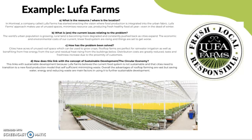The current issues in agriculture: the world's urban population is growing, rural land is becoming more degraded and constantly pushed back as cities expand, and the economic and environmental costs of our current linear food system are rising. Cities have acres of unused roof space which can be used to grow crops. Rooftop farms are perfect for rainwater irrigation, benefit from free energy from the sun, and residual heat rising from buildings below.